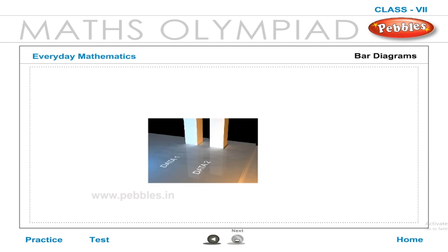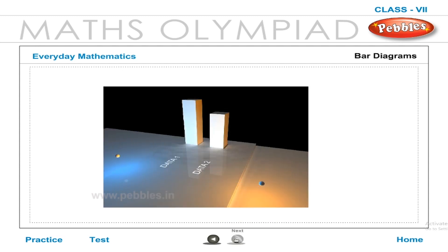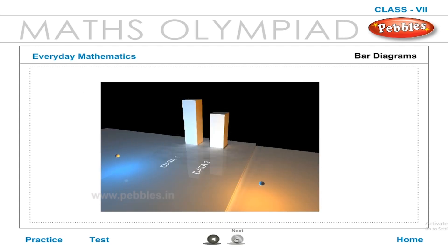Bar Diagrams: Bar diagrams do not use pictures and symbols to represent data. Instead, bars or rectangles are used to represent the value of each data item. The gap between one bar and the next should be constant — in other words, the bars must be equally spaced.